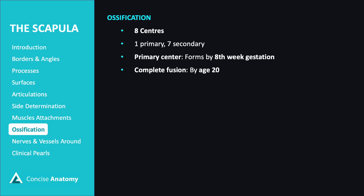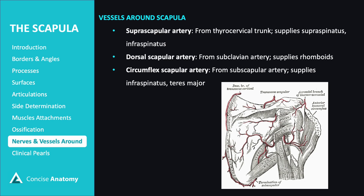There is a rich arterial anastomotic network around the scapula, formed by branches of the first part of the subclavian artery and the third part of the axillary artery. Key contributors include the suprascapular artery and dorsal scapular artery from the subclavian artery, along with the circumflex scapular artery from the axillary artery. This extensive network ensures adequate blood supply and collateral circulation to the muscles and tissues surrounding the scapula.